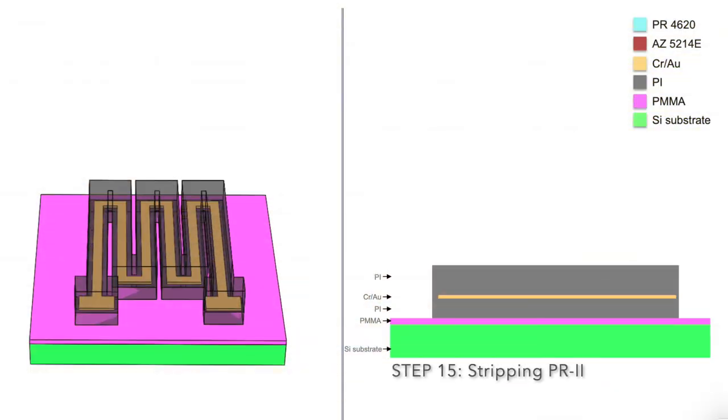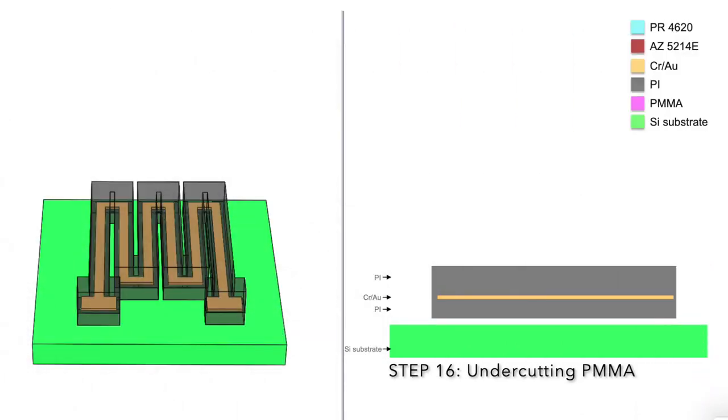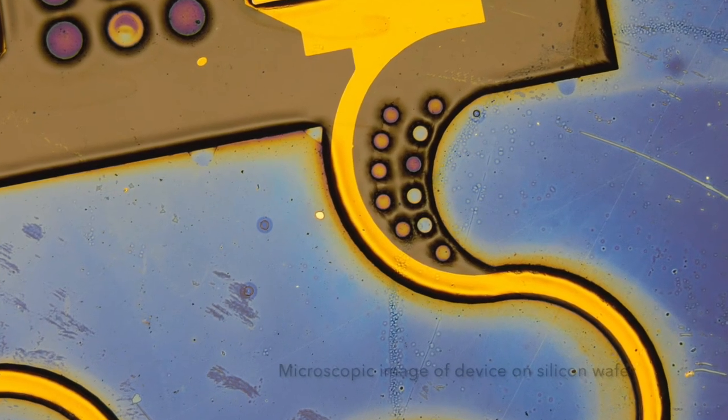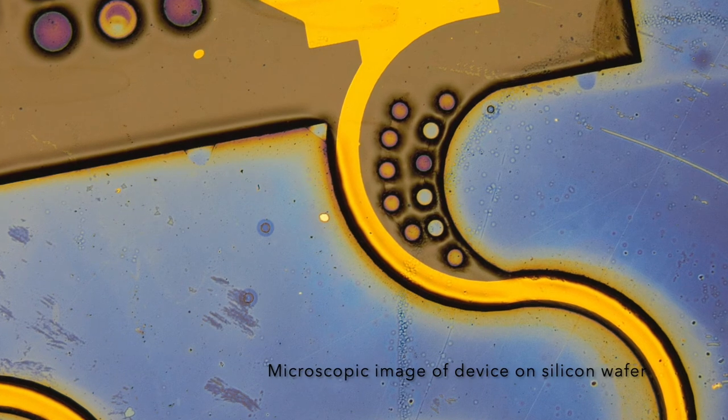Once the dry etch is completed, we can strip photoresist using an acetone swab. We now dissolve the PMMA sacrificial layer in hot acetone to release the device from the wafer by allowing undercutting.